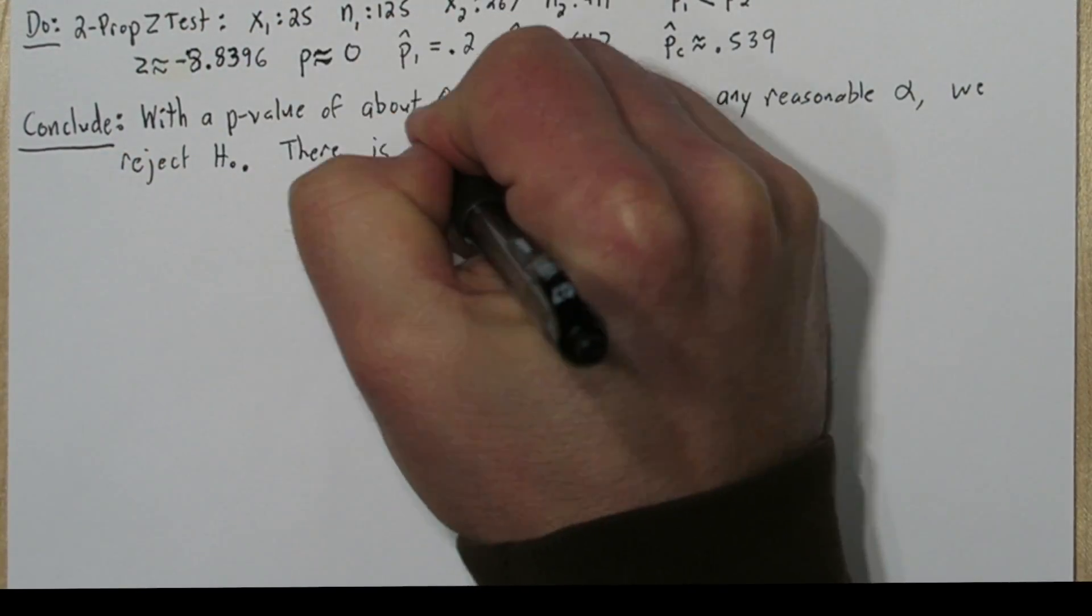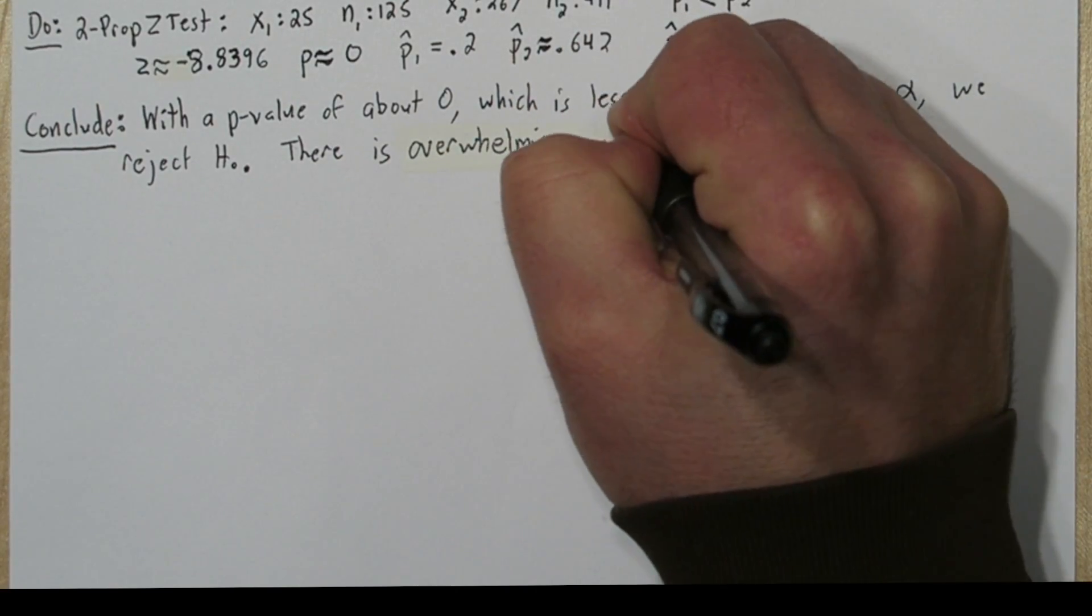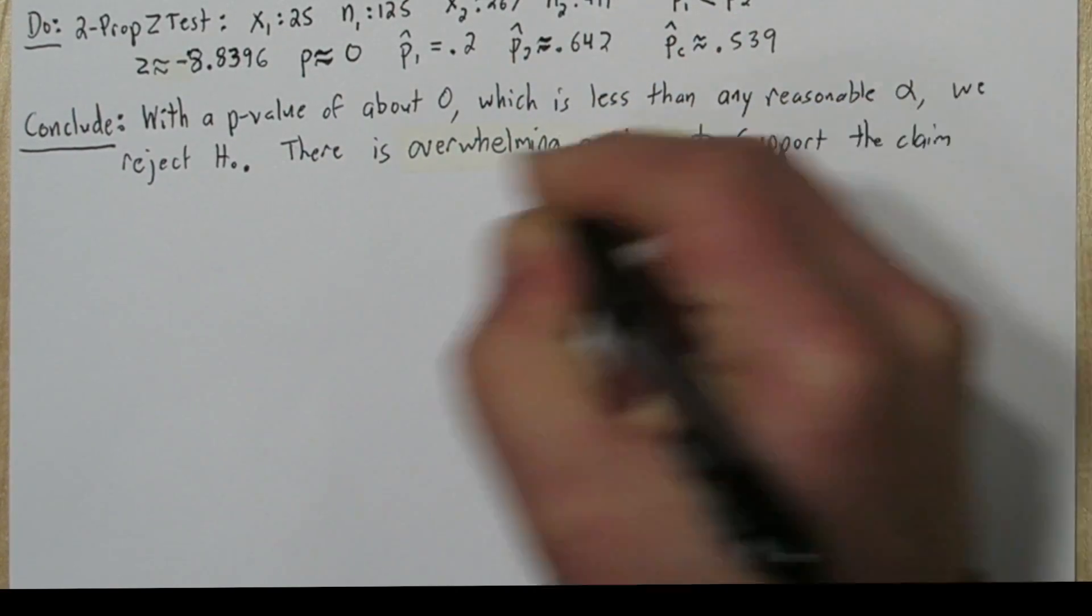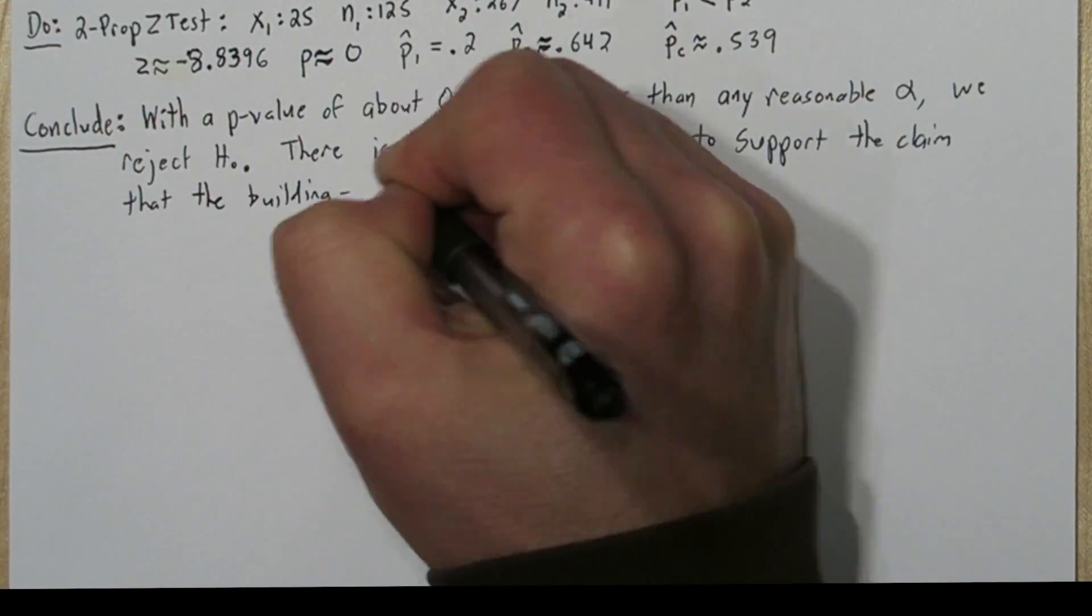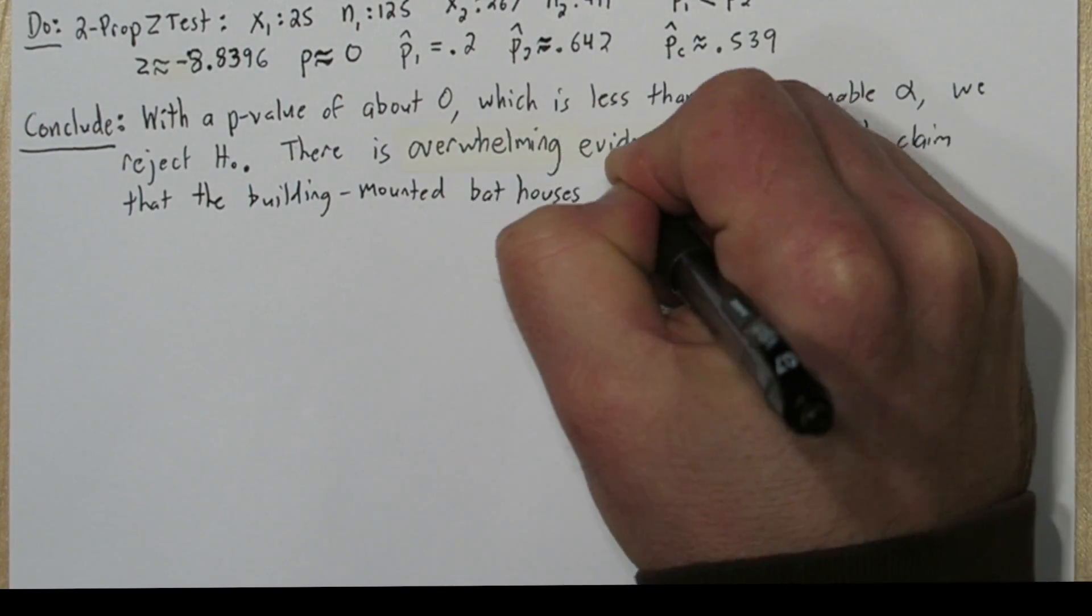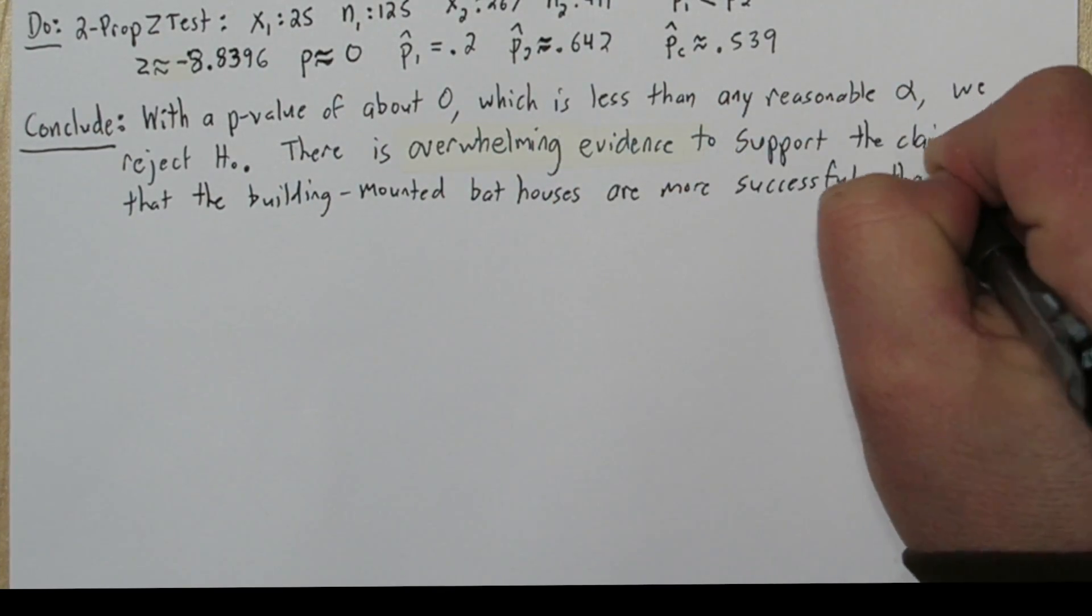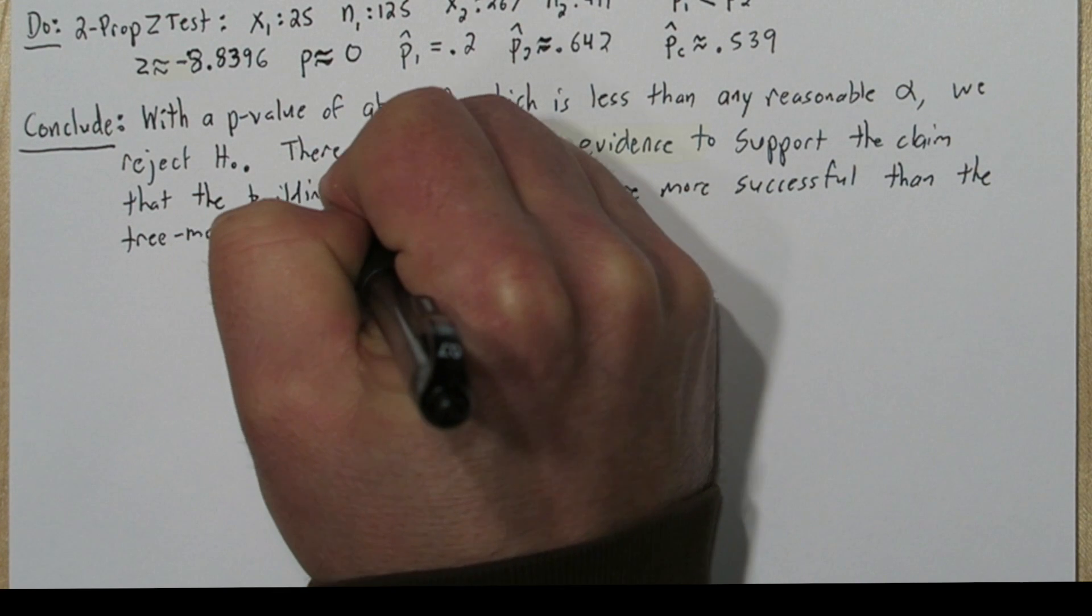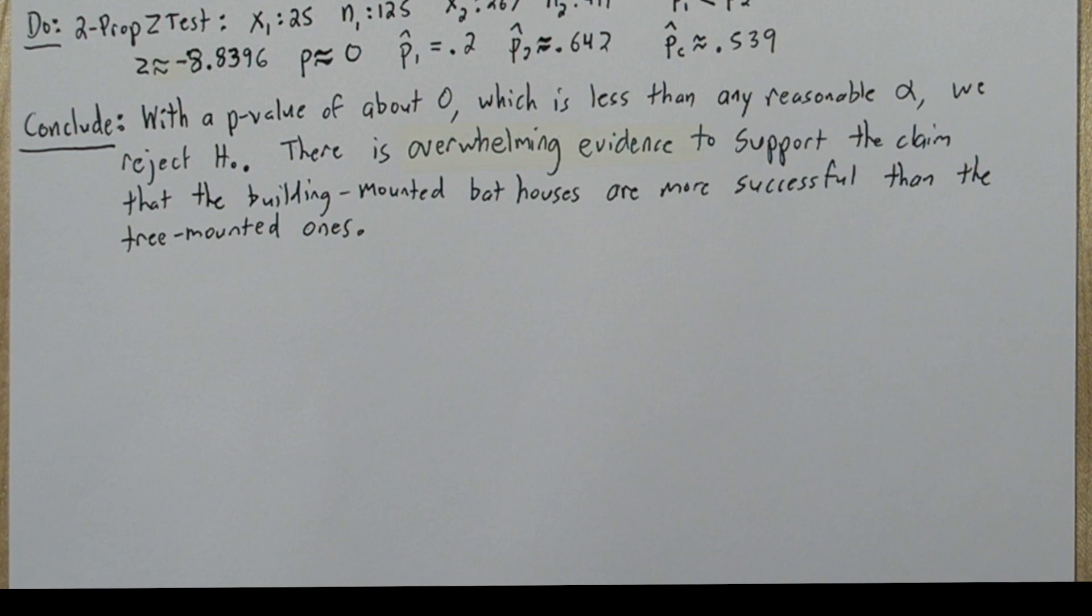So for our conclusion, we'll say, with a p-value of about 0, which is less than any reasonable alpha, we reject the null hypothesis. There is overwhelming evidence to support the claim that the building-mounted bat houses are more successful than the tree-mounted ones.